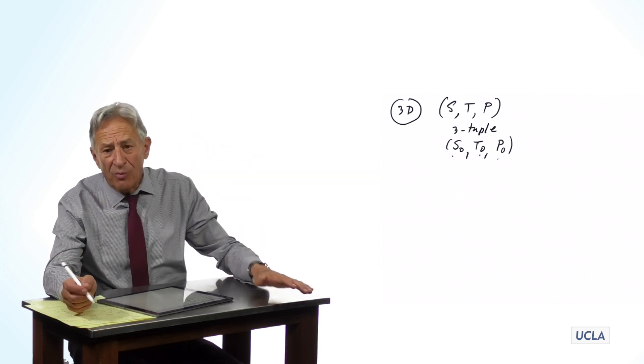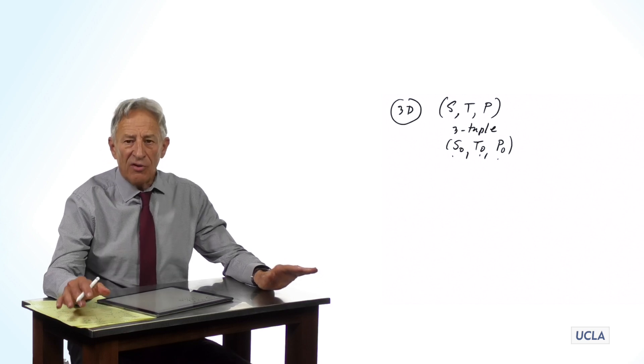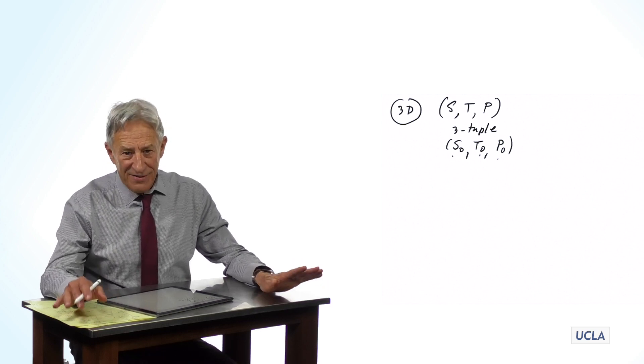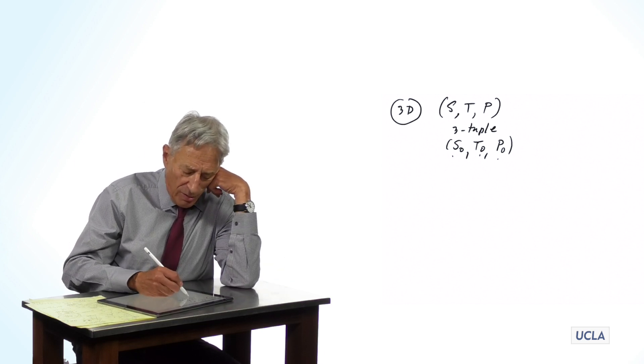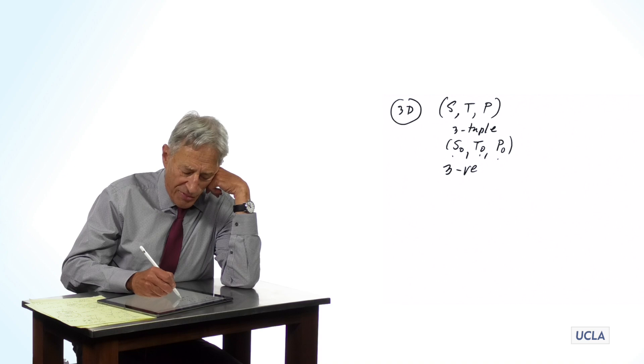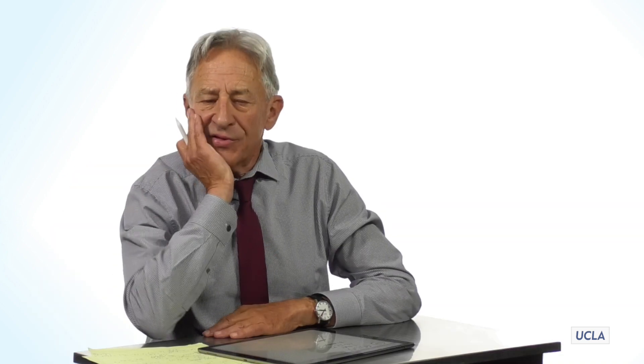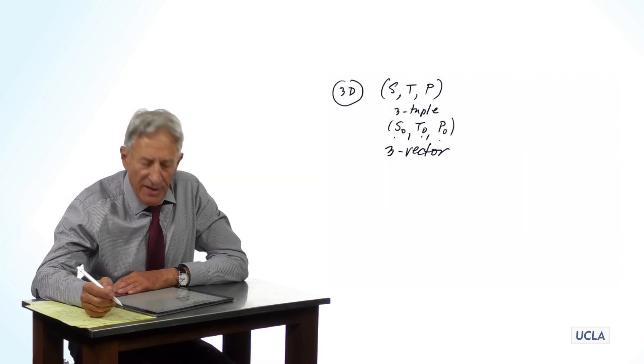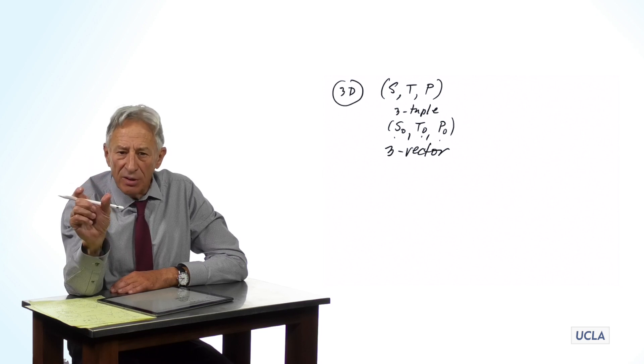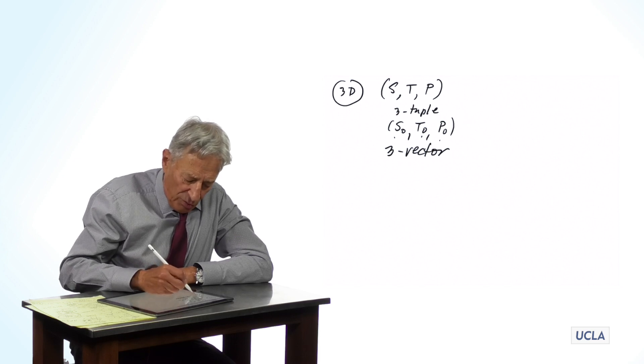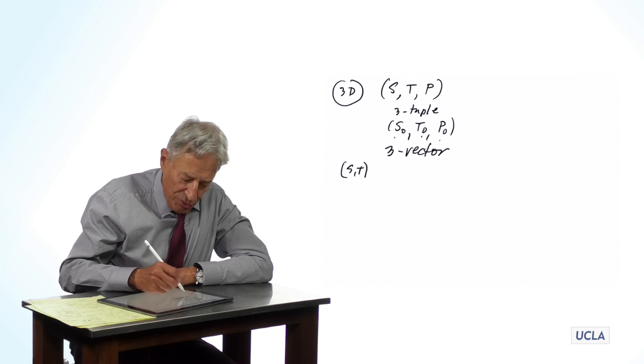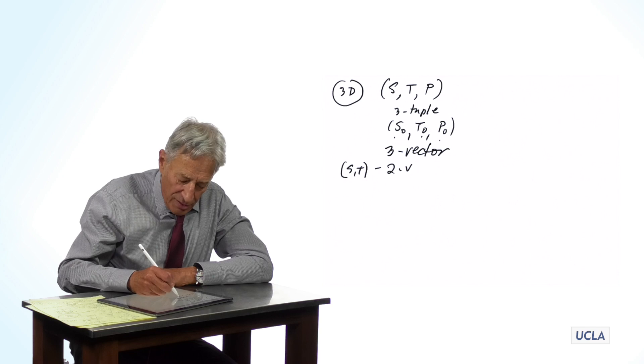As I said, this is a three-tuple, but we might as well start using a fancy word. And the fancy word for three-tuple is a three-vector. That's right. A vector, and you may have associations from high school, but here a vector is an n-tuple of state variables. This is a three-vector. The old shark-tuna two-tuple is called a two-vector.